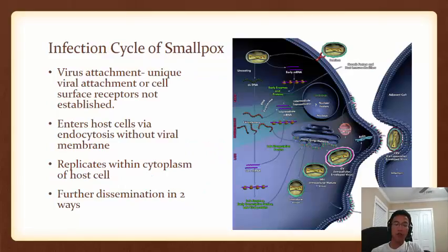The infection cycle of smallpox is complex and not very well understood. It begins with the virus attaching itself to the cell, though the specific viral attachment receptors have not been identified — it is thought there are probably many. The virus then enters the cell via endocytosis, without its viral membrane, and begins to replicate in the cytoplasm of the host cell. This is different from many similar viruses, which replicate in the nucleus instead.